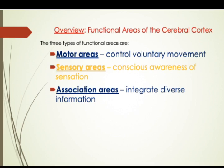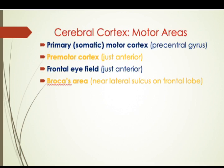Looking at the functional areas of the cerebral cortex, there are three types. The first is the motor area, which controls voluntary movements. Then you have the sensory areas, responsible for conscious awareness of sensation. And then you have association areas that integrate diverse information. Within the motor cortex, you have the primary motor cortex, the premotor cortex, the frontal eye field, and Broca's area.